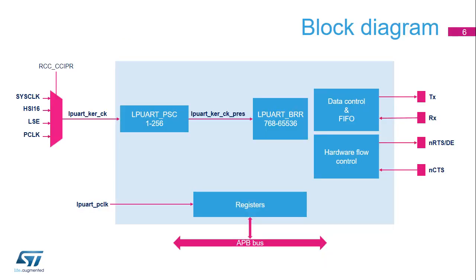This is the LPUART block diagram. The LPUART clock source, LPUART kernel clock, can be selected from several sources: the peripheral clock named APB clock or P-clock, the SYS clock, the high-speed internal 16 MHz oscillator or HSI-16, or the low-speed external oscillator or LSE.